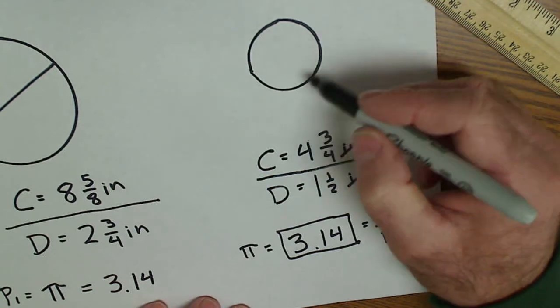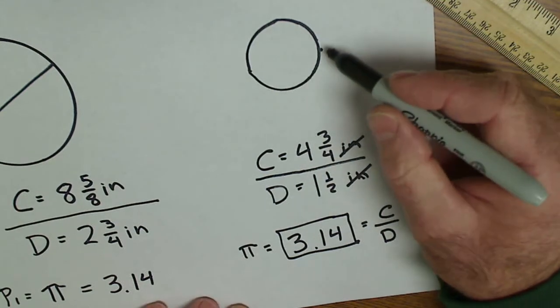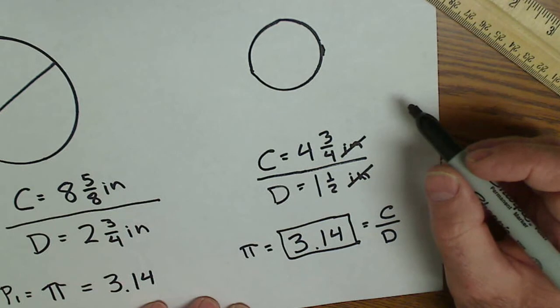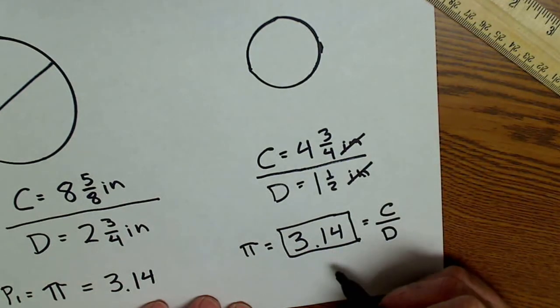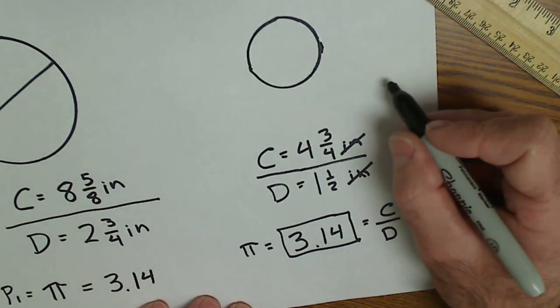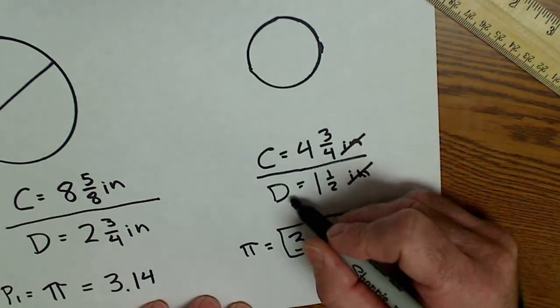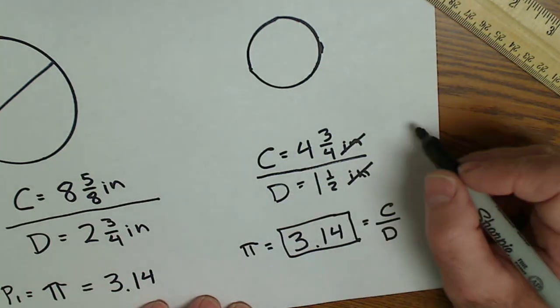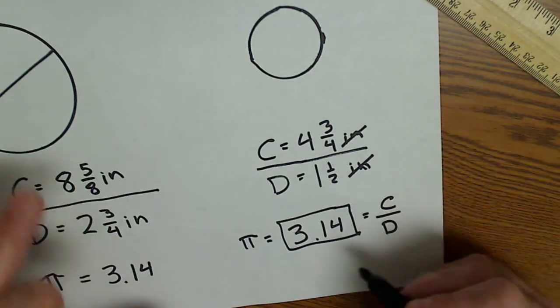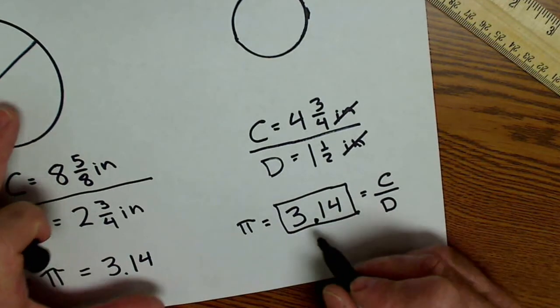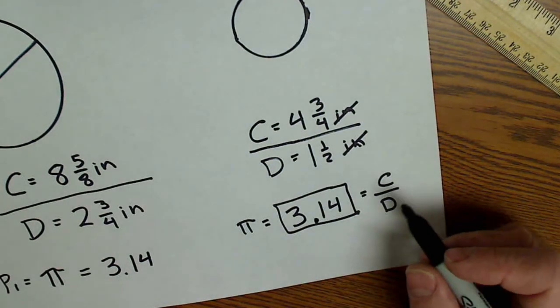So it doesn't matter how big the circle is, whether it's the equator of the planet Earth over the diameter of the Earth, it will always equal 3.14. Or if it were a pinhead, its circumference divided by diameter would equal 3.14. This ratio has been in history for thousands of years.